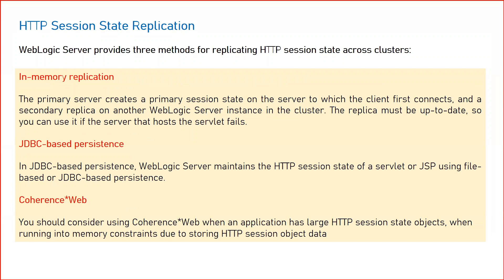When we specifically talk about state replication in WebLogic, there are three methods. First is in-memory replication, where your session data is stored in the memory of your server — all sessions connected to your web application have their session data stored in memory. Second is JDBC: if you have enabled JDBC-based replication, all session data will be stored in the database. Third is Coherence Web, which is a separate technology — a separate plugin installed with your WebLogic server that stores session data in the Coherence Web instead of memory.